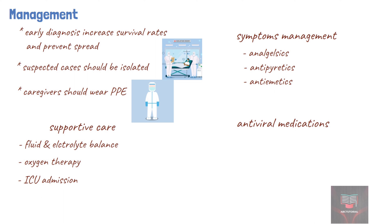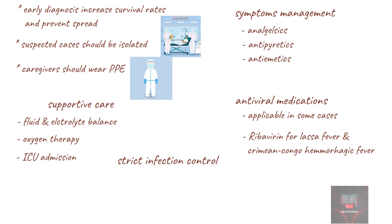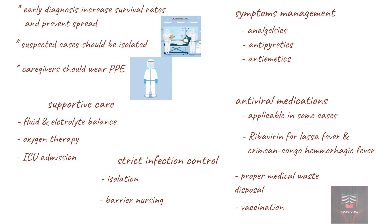Specific antiviral therapies may be employed depending on the causative virus. For example, ribavirin has been used to treat certain viral hemorrhagic fevers like Lassa fever and Crimean-Congo hemorrhagic fever. However, the effectiveness of antiviral drugs can vary and their use may be limited by factors such as the specific virus strain and the stage of the disease. Given the highly contagious nature of some viral hemorrhagic fevers, strict infection control measures are paramount, such as isolation precautions, barrier nursing, proper disposal of medical waste, and deployment of vaccines where possible.